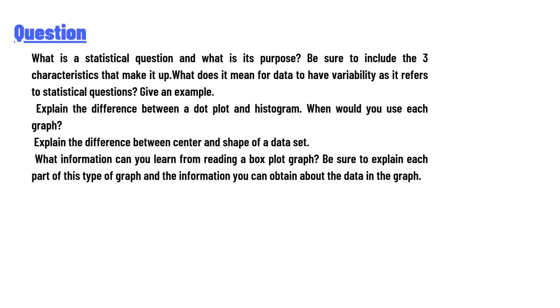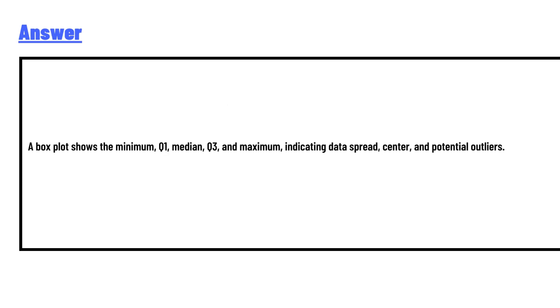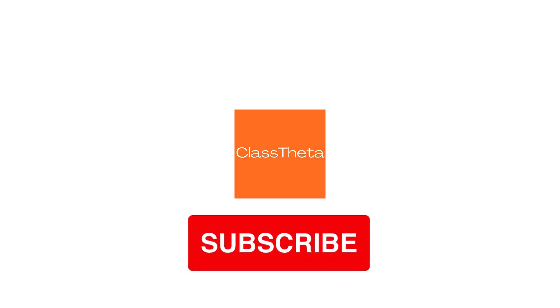The answer to the question is: A box plot shows the minimum, Q1, median, Q3, and the maximum, indicating data spread, center, and potential outliers. This is the correct answer to the question.